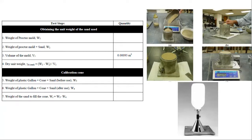Next, we calibrate the sand cone device. The sand cone device has two parts: a funnel-shaped cone and a plastic gallon container. We place the sand cone device on a plain surface, open the valve so sand fills the cone, then close the valve. We record the weight before and after use; the difference is the weight of sand required to fill the cone.